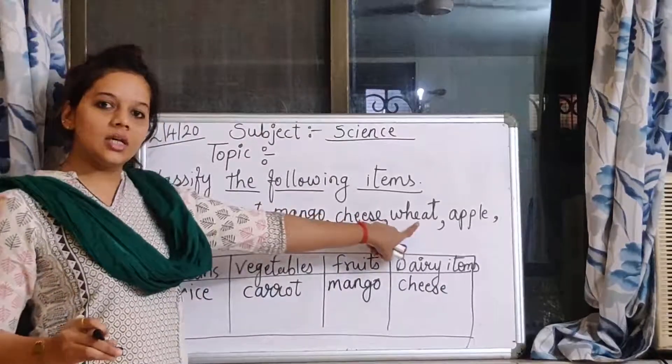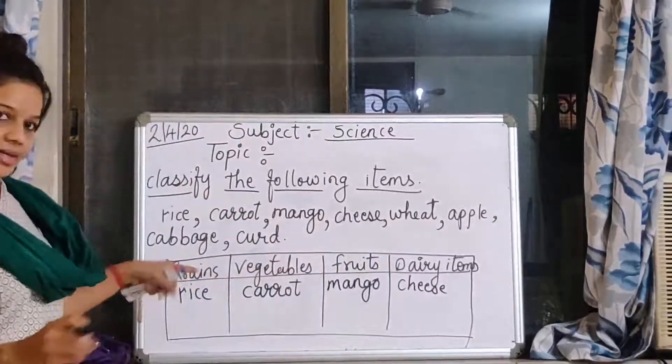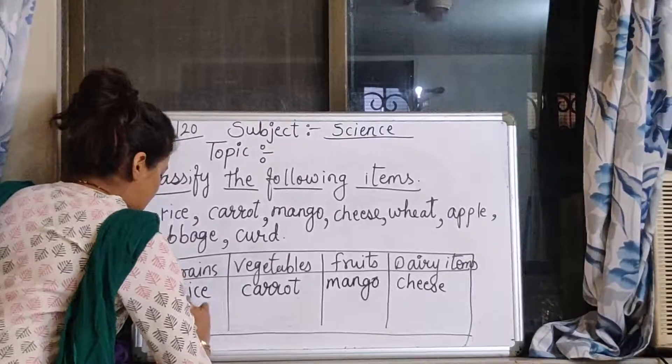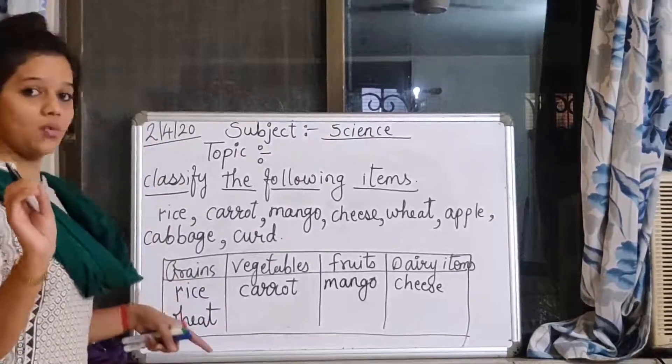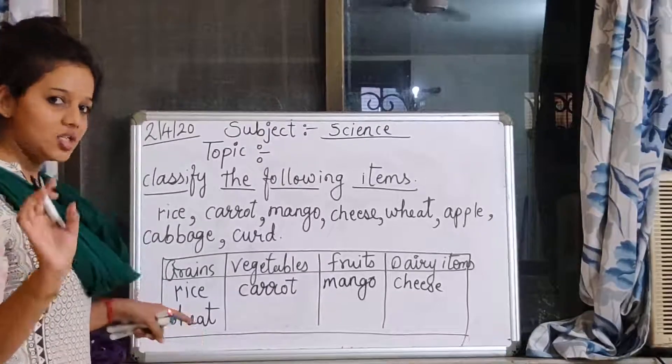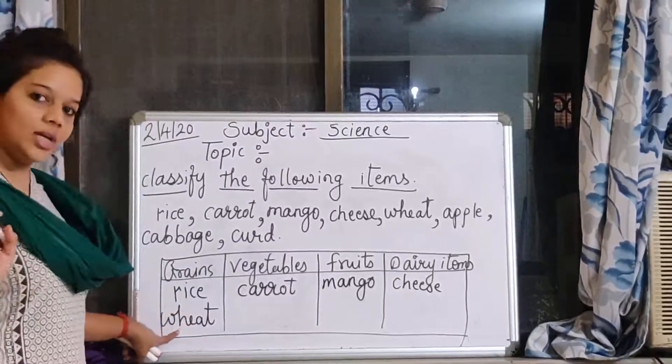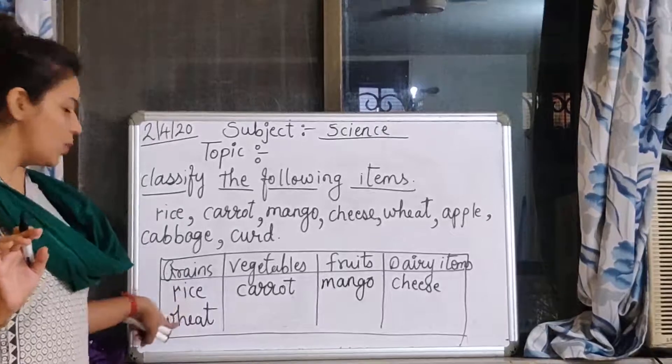Next is wheat. Wheat is what? Grains. Wheat means gehu. Gehu chapati. Those what we are eating every day, chapati. It is made from wheat. Rice. These two are grains.